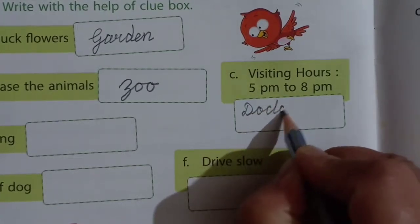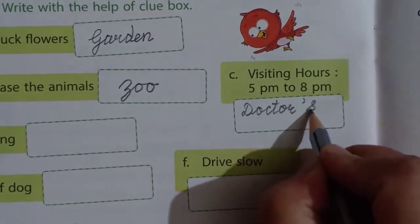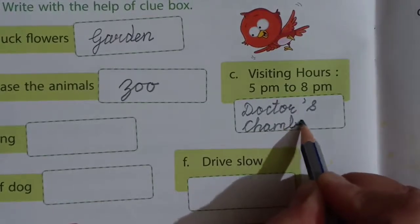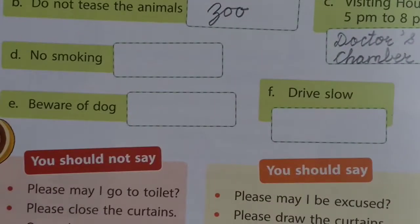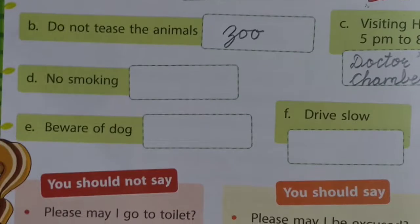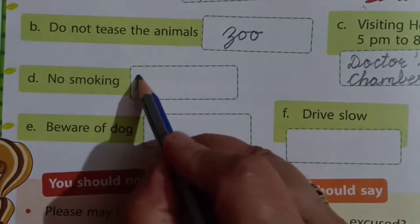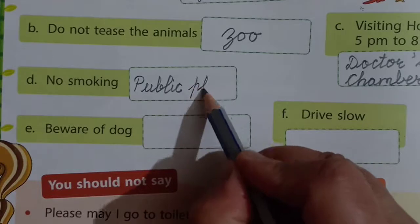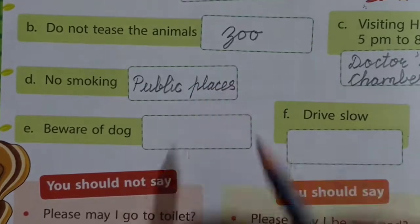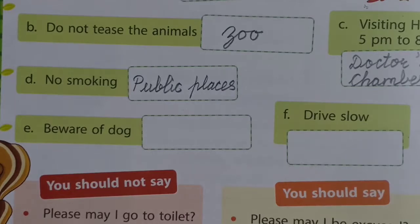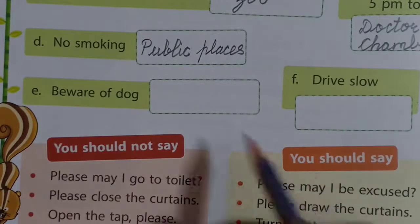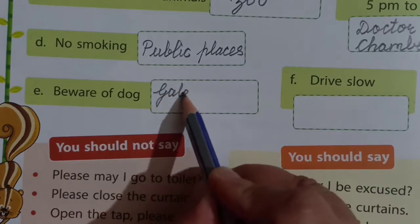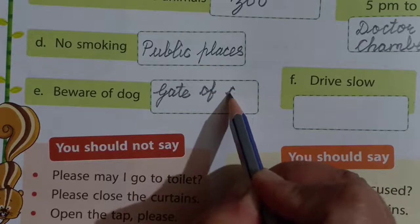D-O-C-T-O-R is doctor apostrophe S — the chamber belongs to the doctor. Chamber is his room. 'No smoking' — you should not smoke in public places. Spelling: P-U-B-L-I-C P-L-A-C-E-S, public places. 'Beware of dog' — those who keep dogs write this on their gate, so it is written on the gate of a house. This notice is written for strangers.